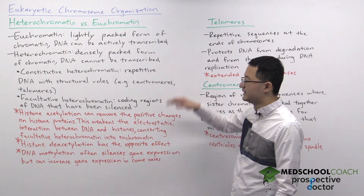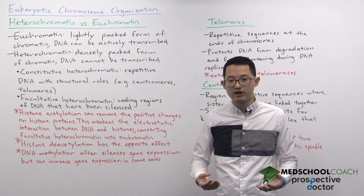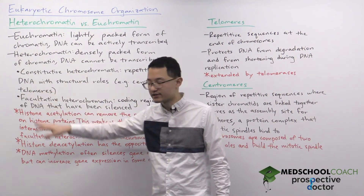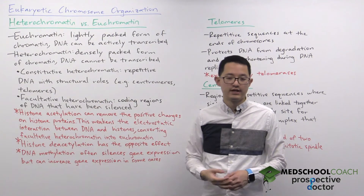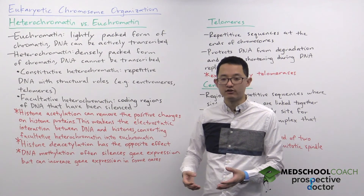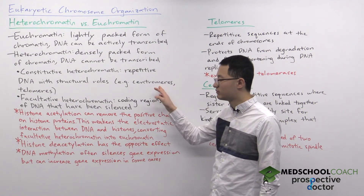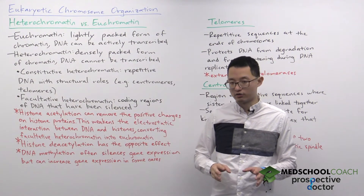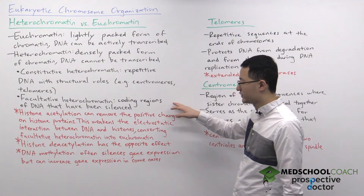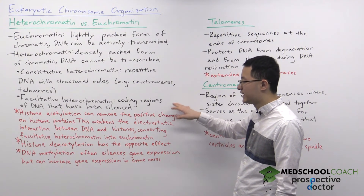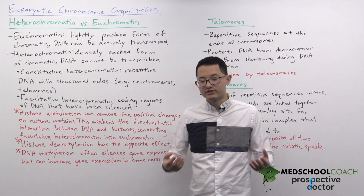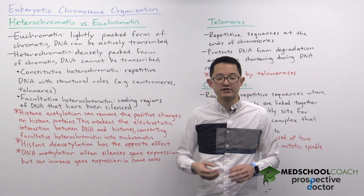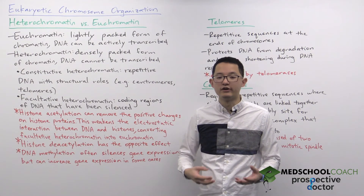Constitutive heterochromatin is never transcribed and generally consists of repetitive DNA sequences with structural roles. Examples include centromeres and telomeres, which we'll discuss more about shortly. Facultative heterochromatin may include coding regions that have been silenced — essentially, gene expression has been turned off.